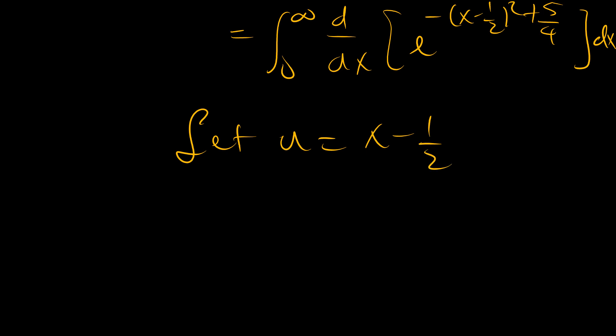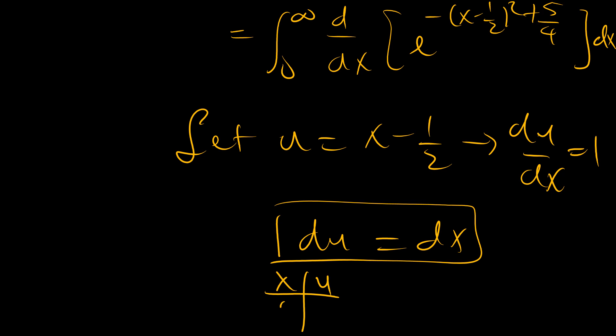And so we can say, let u be equal to x minus a half, such that du/dx is equals to one, and so we can replace dx with just du. And then on the limit, x and u, when x equals zero, negative a half, when x is infinity, it's infinity.